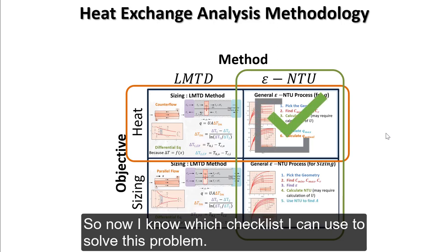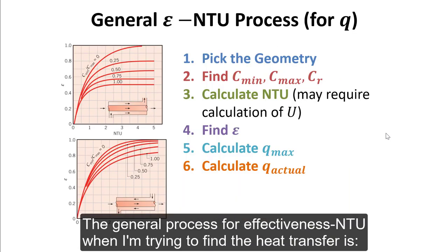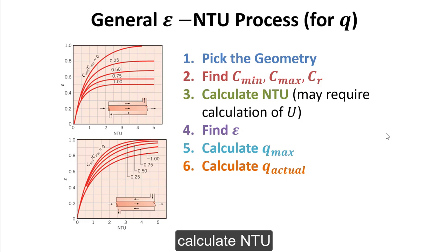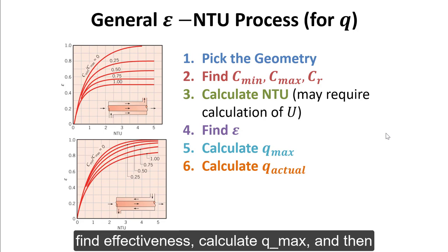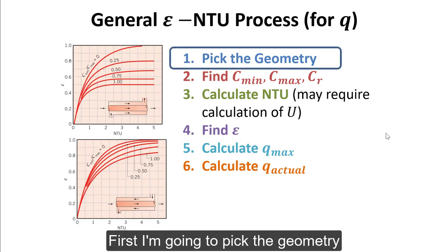Now I know which checklist I can use to solve this problem. The general process for effectiveness-NTU, when I'm trying to find the heat transfer, is to: pick the geometry, find the big C's, calculate NTU, find effectiveness, calculate Q max, and then calculate Q actual. First, I'm going to pick the geometry.